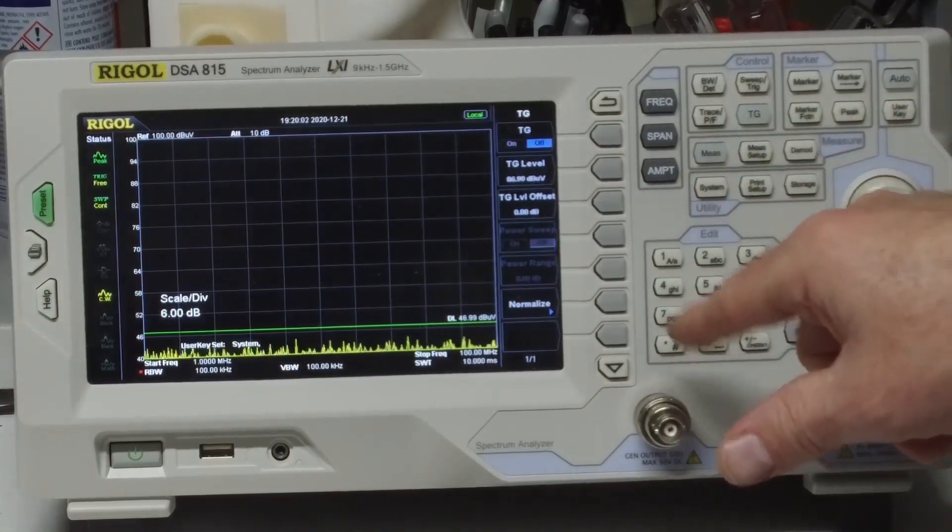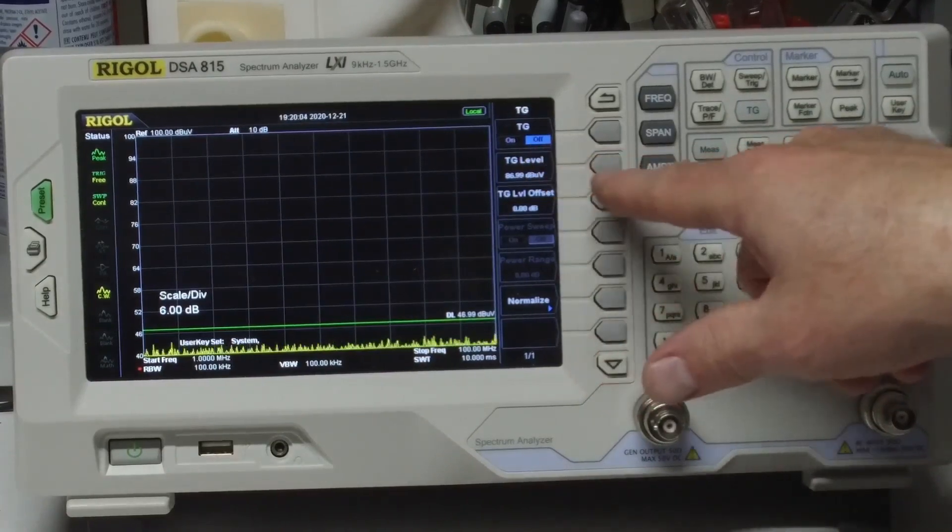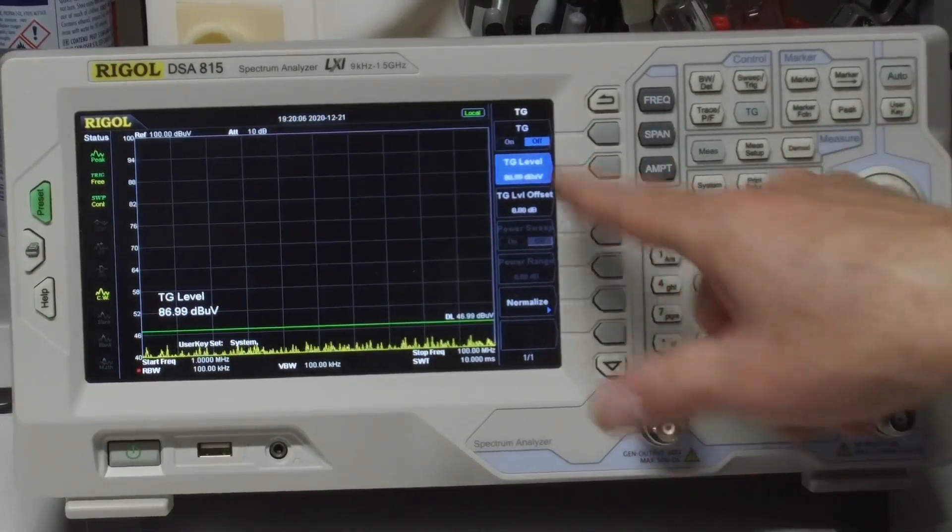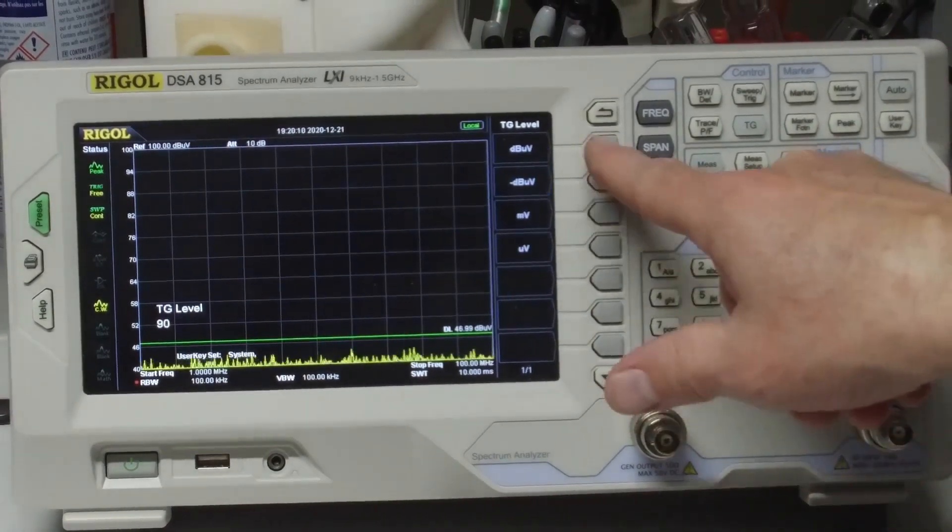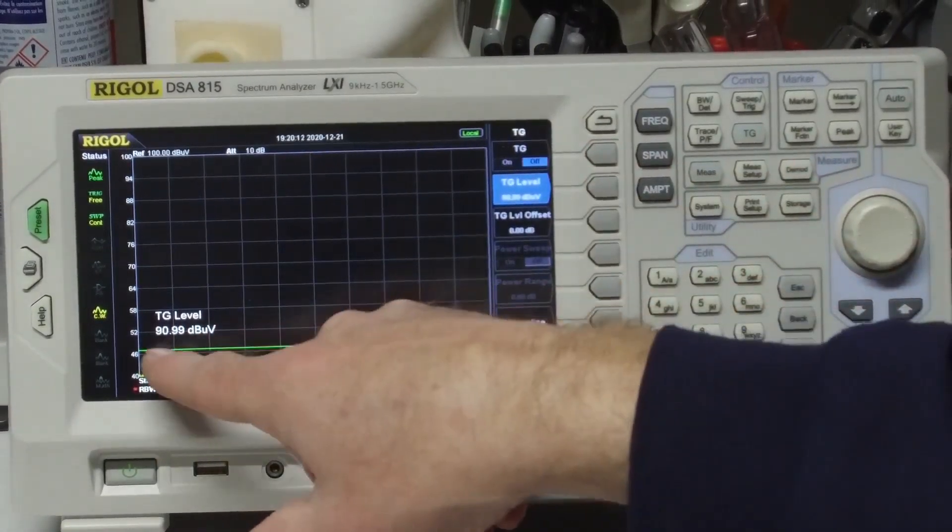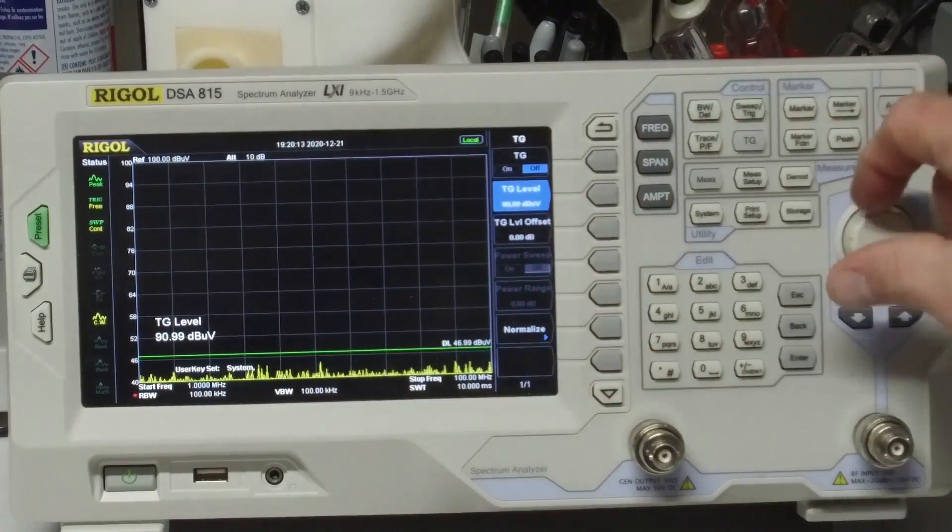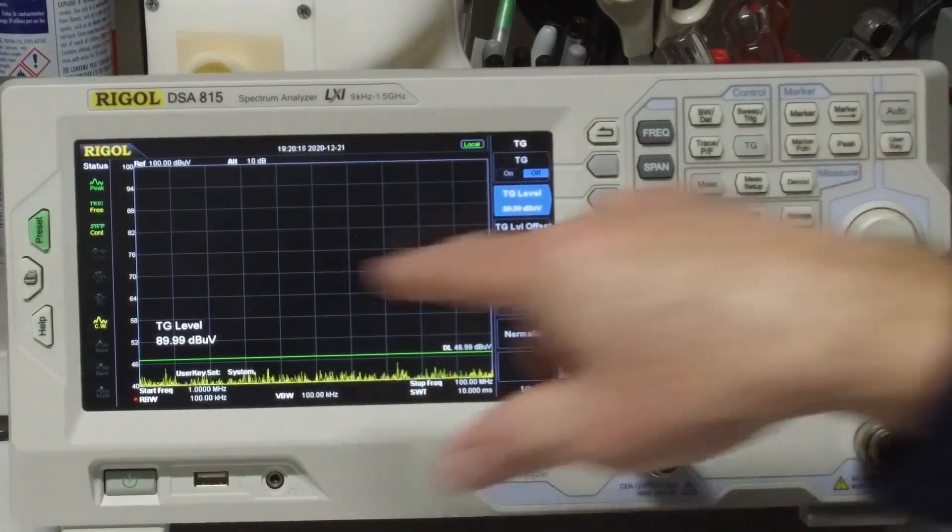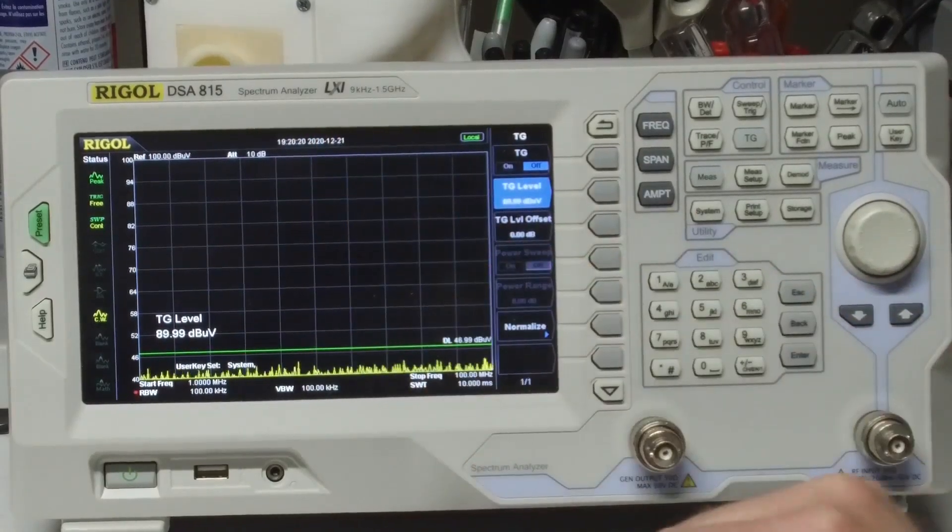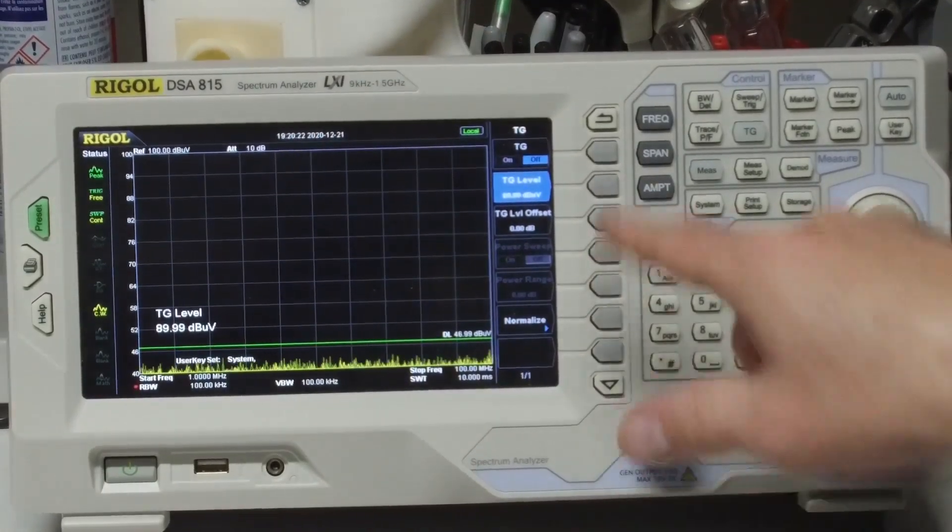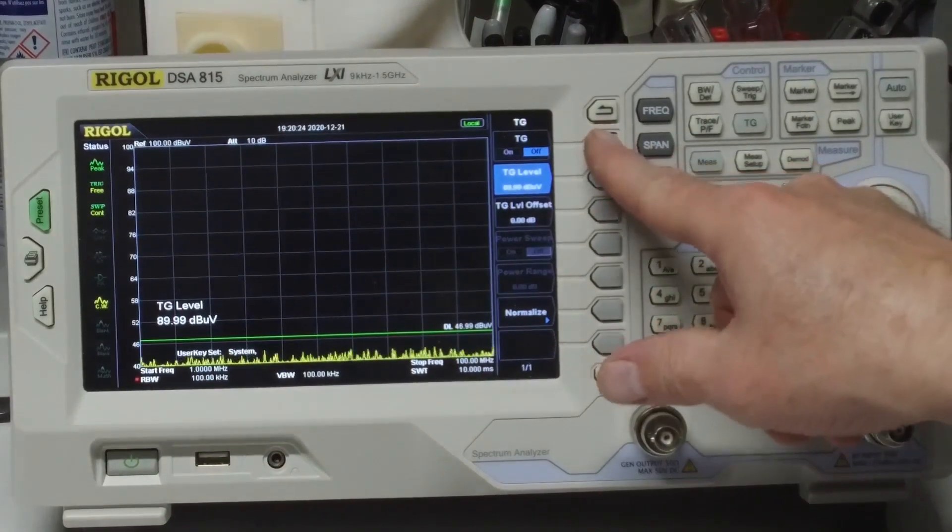Let's go to the tracking generator. Let's set the tracking generator to a nice even number, let's go to 90 dB. And for some reason it goes to 90.99, I don't know why. I'm just going to take that down one click and we're now at 89.99, so roughly 90 dB. Let's turn on the tracking generator now.